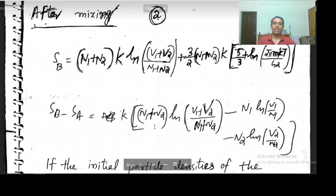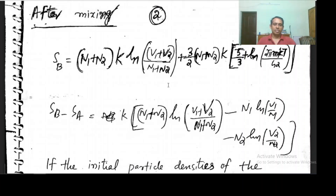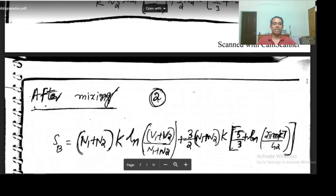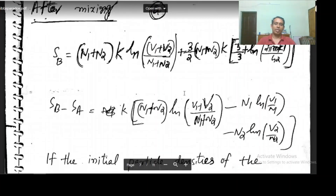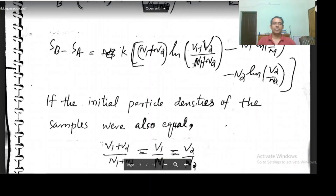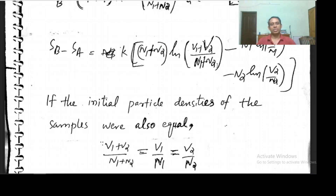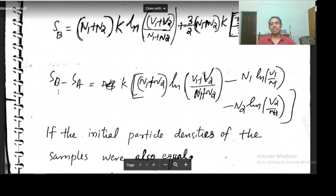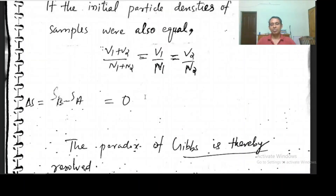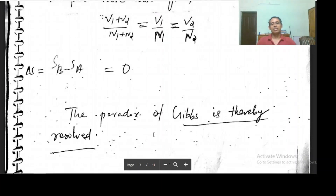The entropy after mixing has k(n₁ + n₂)log(v₁ + v₂). If I take Sb minus Sa, the net increase in entropy, I get k times (n₁ + n₂)log(v₁ + v₂) minus n₁ log(v₁/n₁) minus n₂ log(v₂/(n₁+n₂)). Since particle densities are the same, n₁ log[(v₁+v₂)/(n₁+n₂)] minus n₁ log(v₁/n₁) equals 0, and similarly for n₂. So the expression in the brackets equals 0.